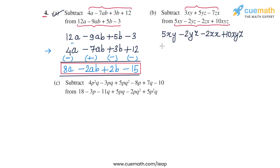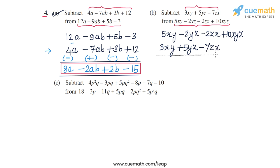So we have 3xy written below 5xy, then plus 5yz written below minus 2yz, and then minus 7zx written below minus 2zx. Now we will carry out the subtraction process.